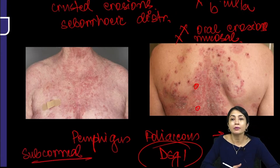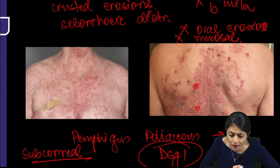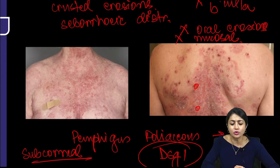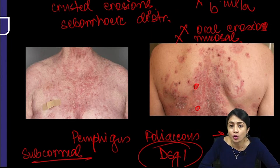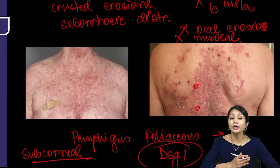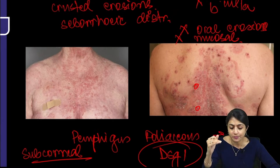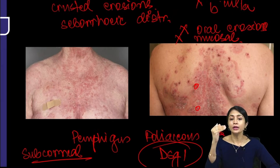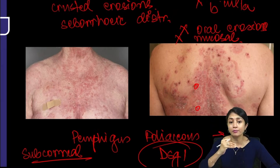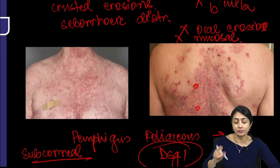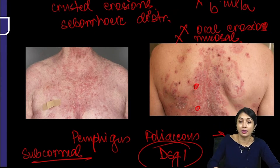The split will be sub-corneal here to be specific. Sub-epidermal split would be below the epidermis — that is not what we see here. You would say either a sub-corneal or an intra-epidermal split, not sub-epidermal split. Please remember this.